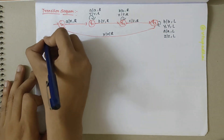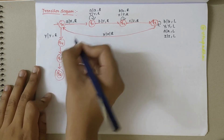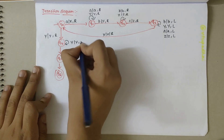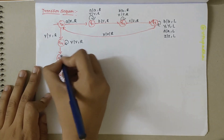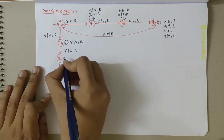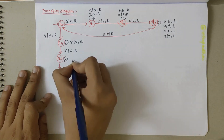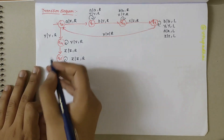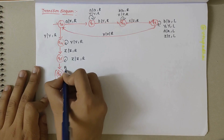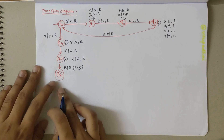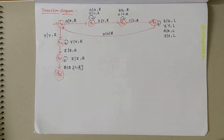Q0 to Q4 transition happens when we replace Y by Y and move right. In Q4, self-loop occurs when Y→Y and move right. Q4 to Q5 transition happens when we replace Z by Z and move right. In Q5, self-loop: Z→Z and move right. Q5 to Q6 happens when we encounter blank B — Q6 is the final state.